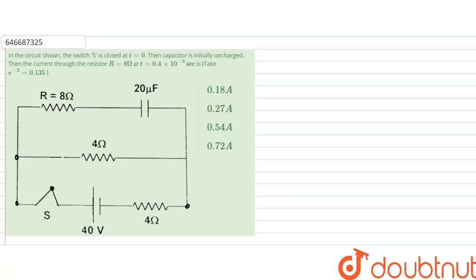Hello, we are given a question and the question here says that in the circuit shown, the switch S is closed at t equals 0. So this is closed at t equals 0.